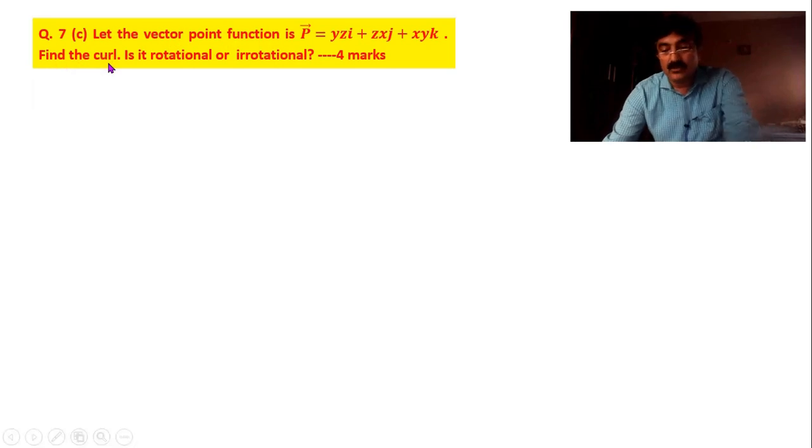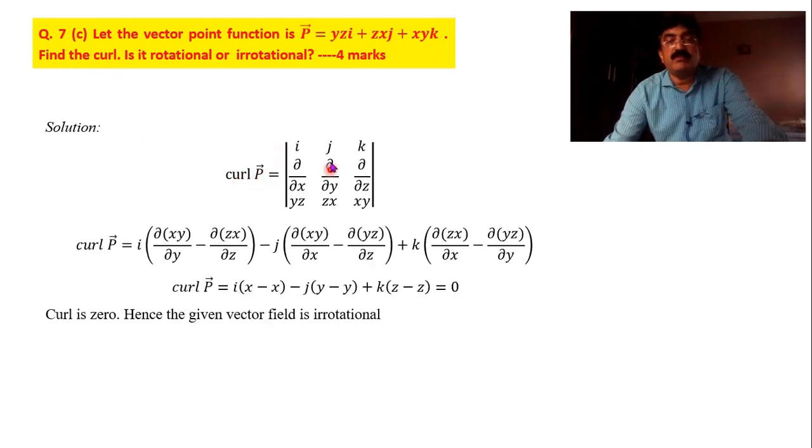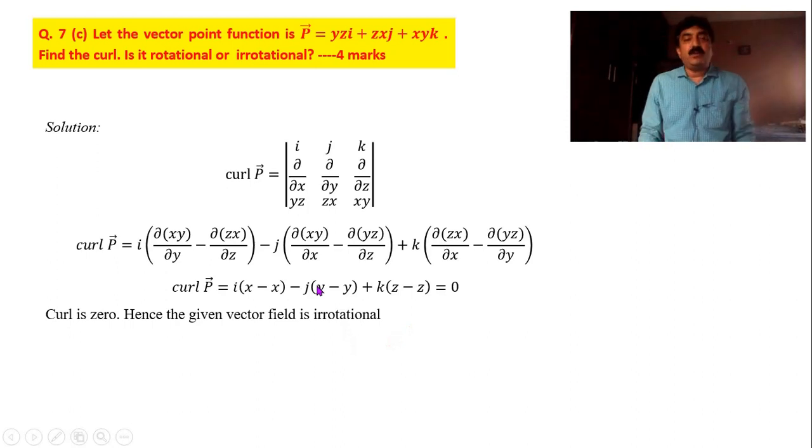You know how to find the curl. It is nothing but cross product. Curl P is given by this matrix. And you know how to find. First you write i and then leave this column and this row. Next this into this, this into this. That I have done here. Minus j. J leave this column, this row. Next this into this, and yz into ∂/∂z yz. Similarly plus k. When you differentiate ∂y/∂y = 1, so I left with x here. Next ∂z/∂z, I left with x here. So x minus x. When you differentiate y minus y, when you differentiate z minus z. So when you get x minus x, y minus y, z minus z, whole thing become zero. When total curl is zero, we call it as an irrotational field.